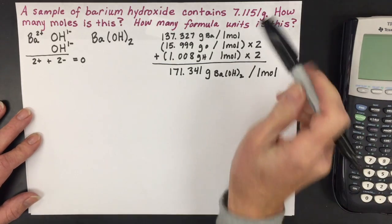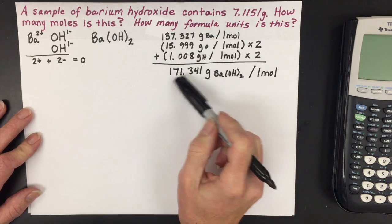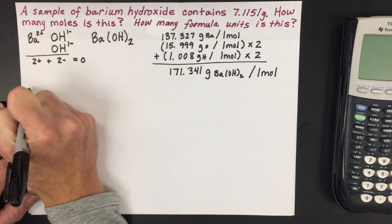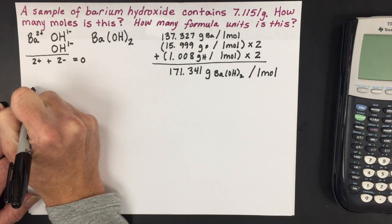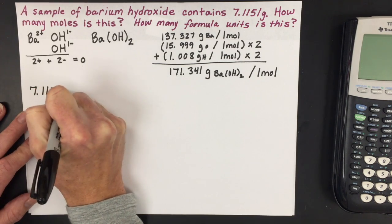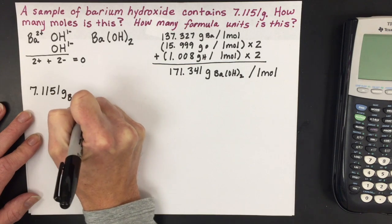If you look at the mass I was given, I do not have a mole amount. I would have to have 171 grams and I only have seven, so I have a decimal amount of a mole. The first calculation is taking the 7.1151 grams, which has five significant figures of barium hydroxide.